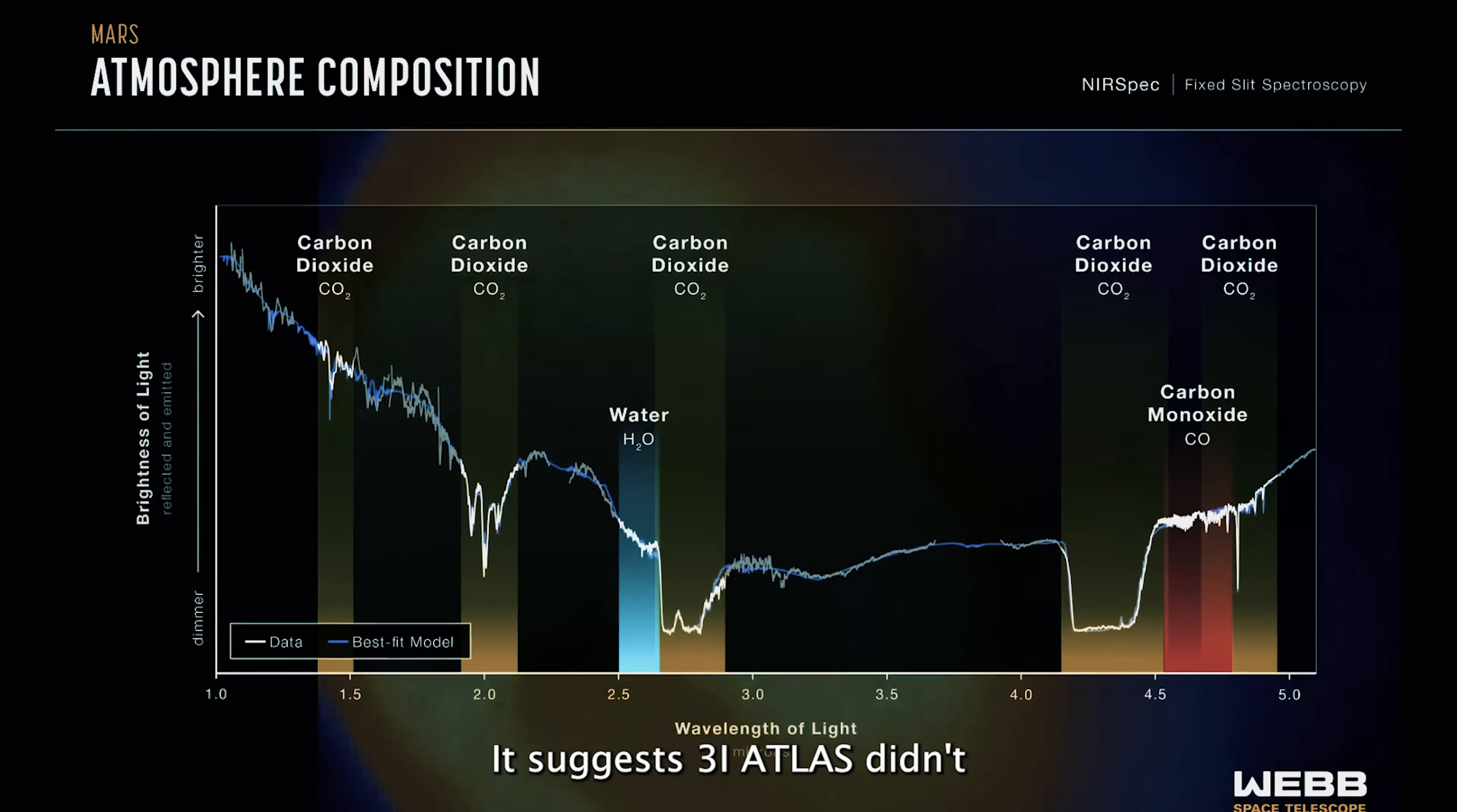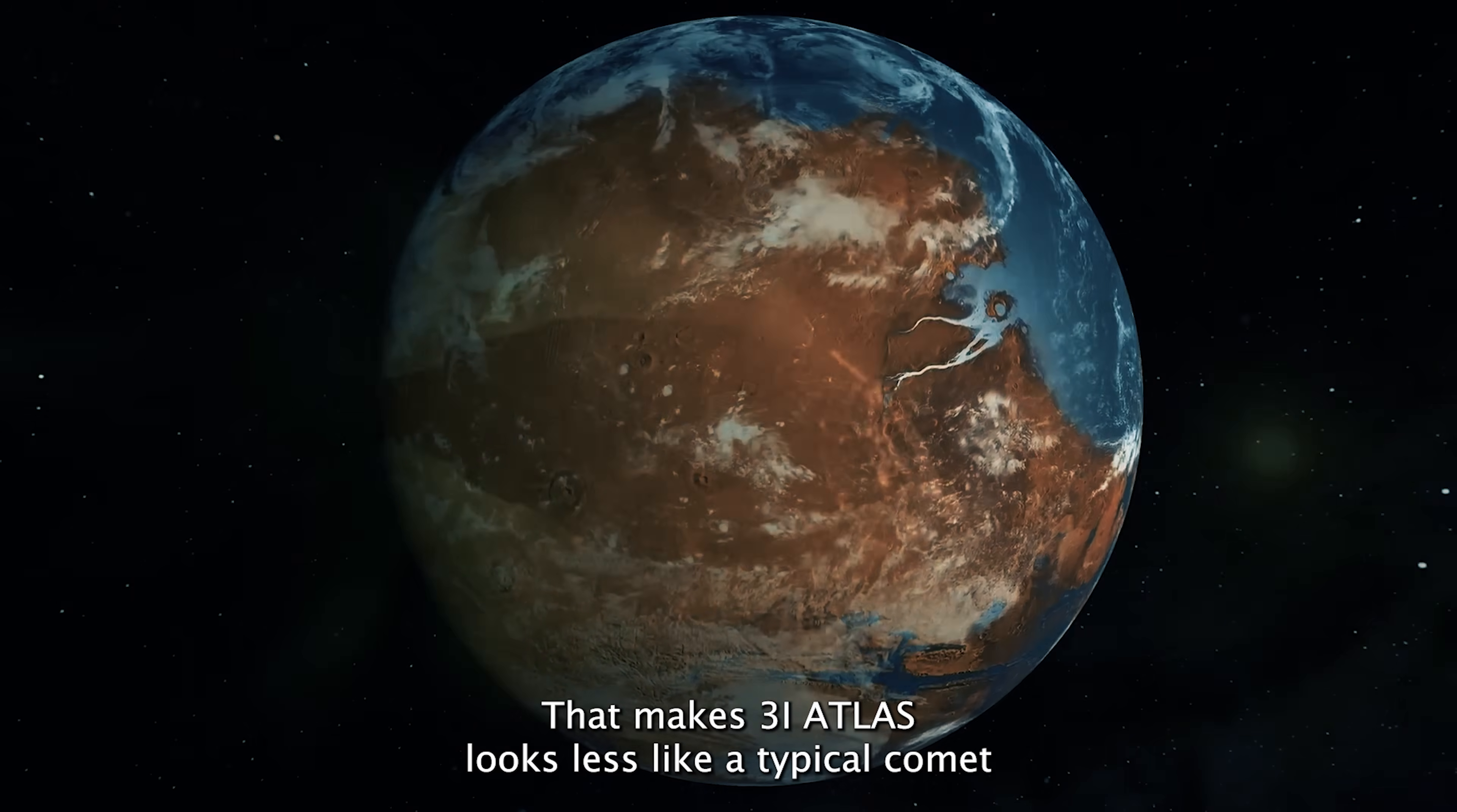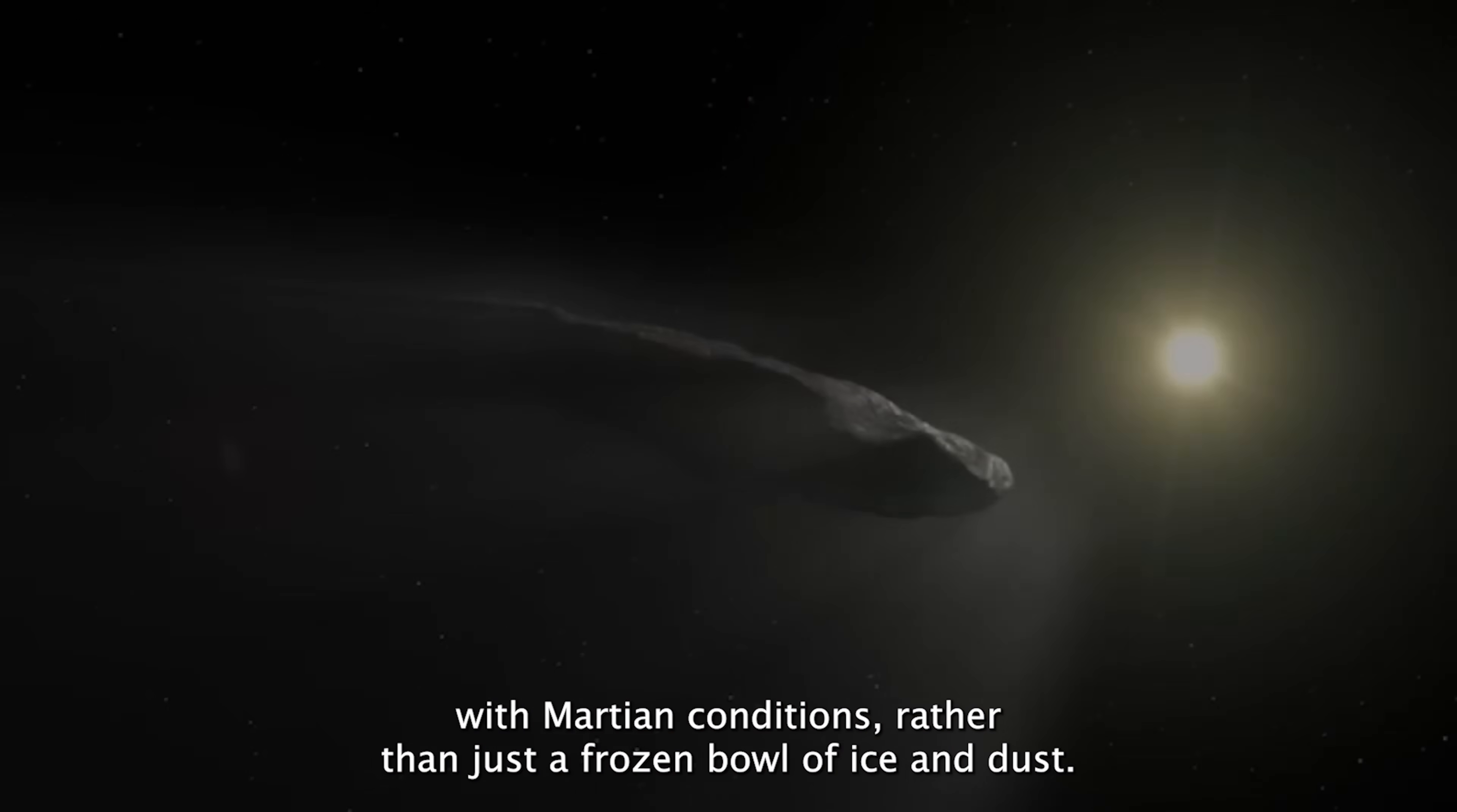It suggests 3i Atlas didn't form in the classic icy nursery where most comets are born. Instead, it may have emerged in a planet-like environment, a place rich in oxygen, more chemically evolved, and strikingly similar to Mars. That makes 3i Atlas look less like a typical comet and more like a fragment or even a leftover shard from a planet with Martian conditions rather than just a frozen ball of ice and dust.